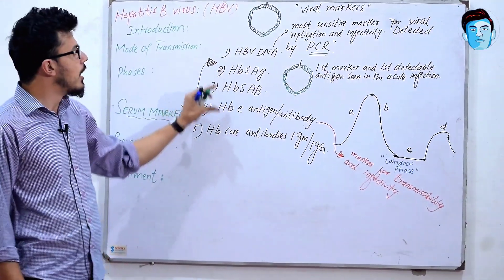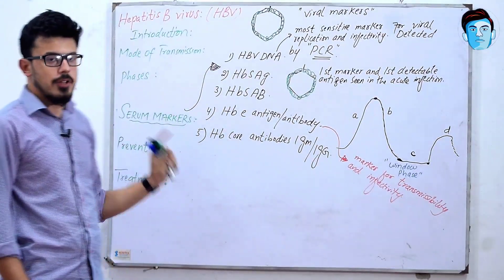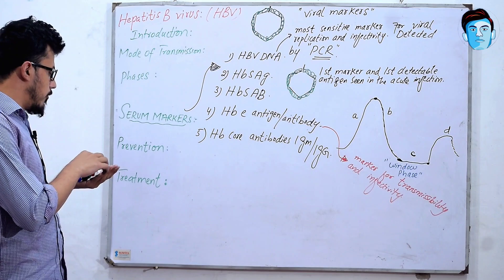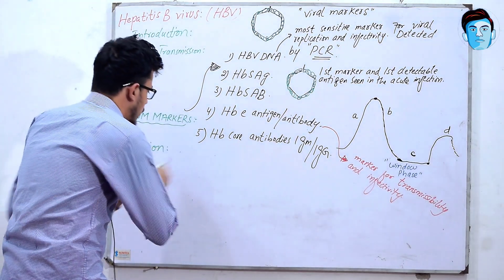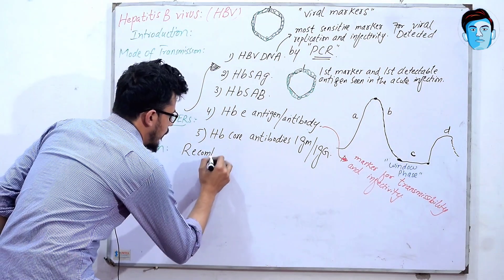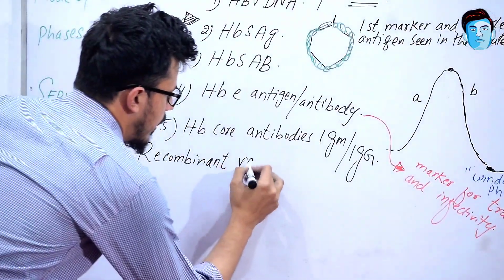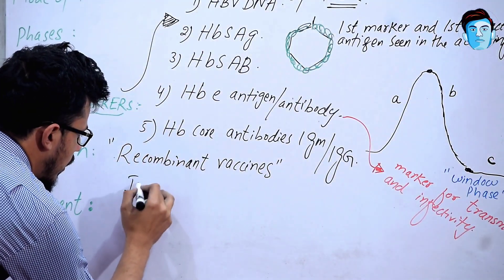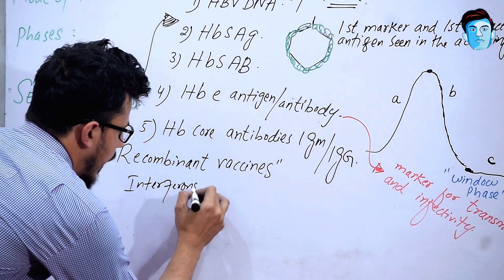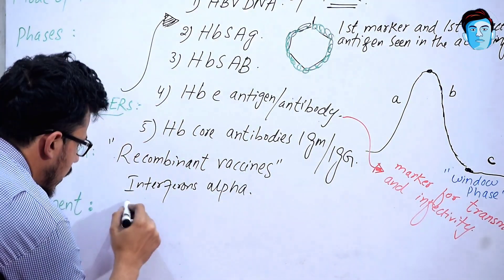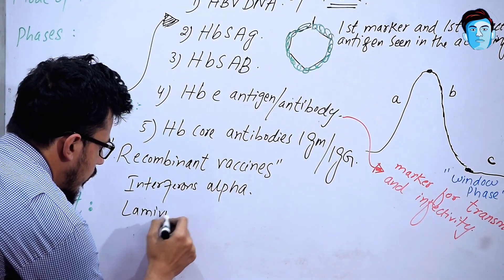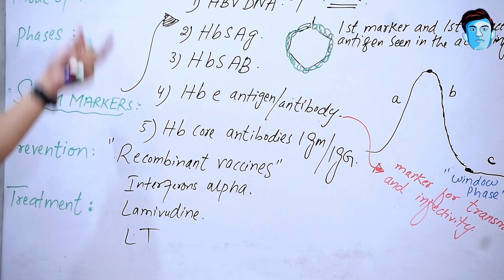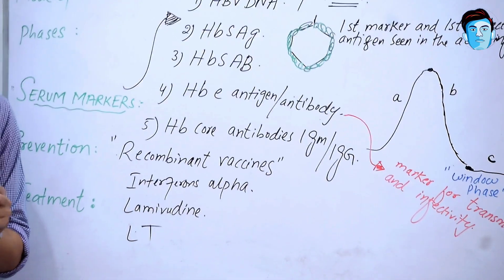Now, how can you prevent the patient from this condition? For prevention, we have to give recombinant vaccines. For treatment, you can give interferon alpha and lamivudine, and you can also go for liver transplantation. That's all about the Hepatitis B virus. Hope you got the lecture — thank you.